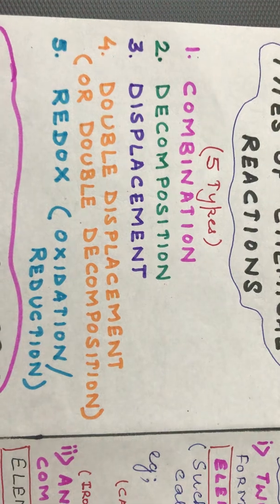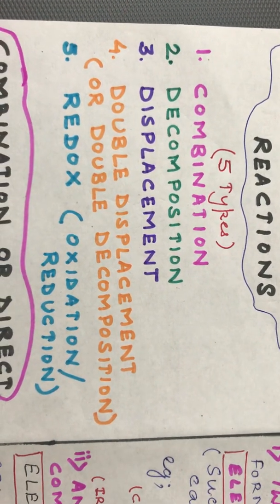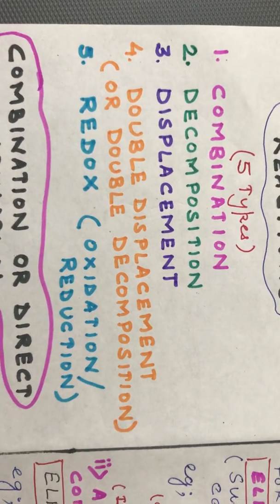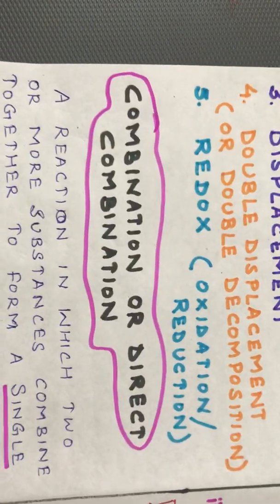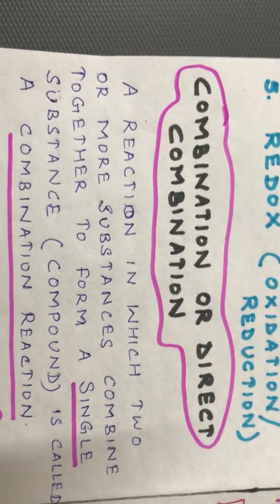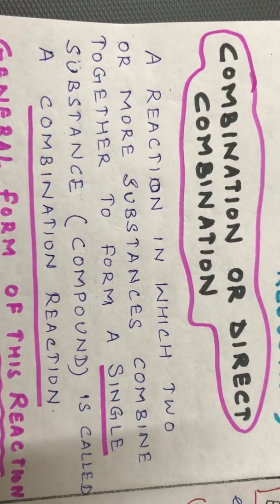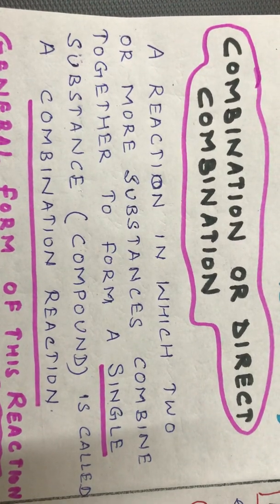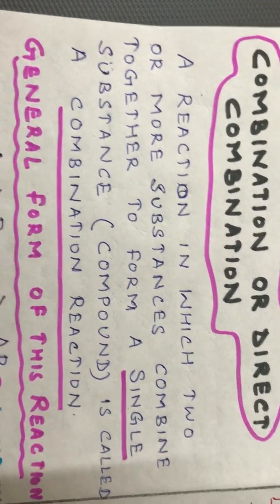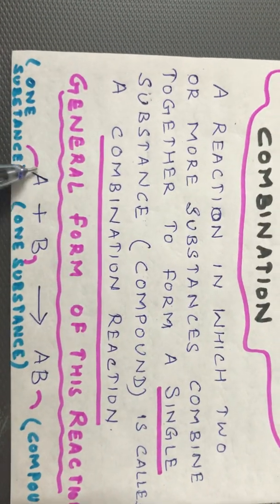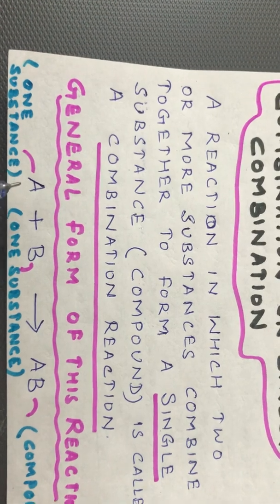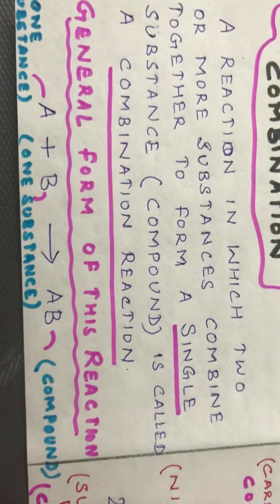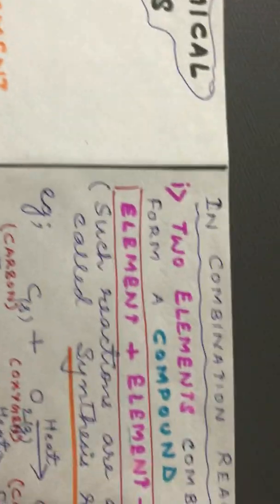The five types are: combination, decomposition, displacement, double displacement or double decomposition, and redox — also known as oxidation or reduction reaction. Today we will be discussing the combination or direct combination reaction. In simple terms, a reaction in which two or more substances combine together to form a single substance, that is a compound, is called a combination reaction. The general form of this equation is A + B → AB, where A and B are the combining substances and AB is the compound formed.